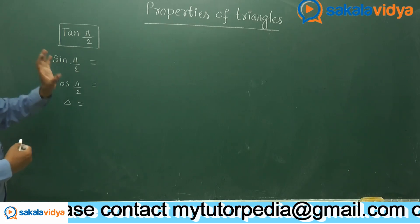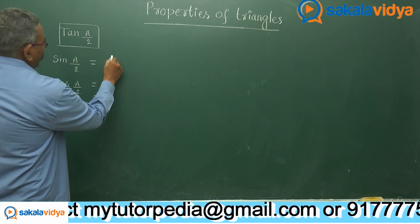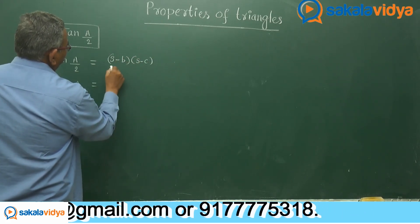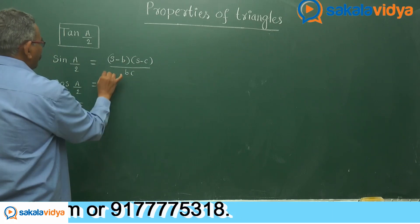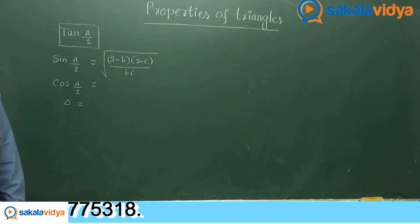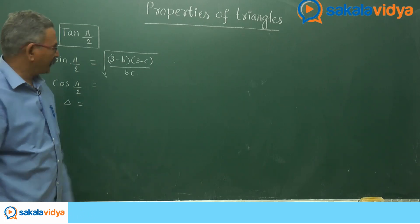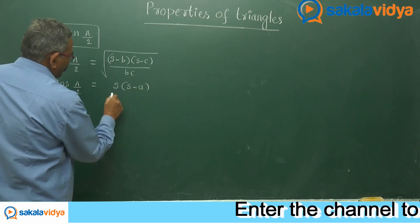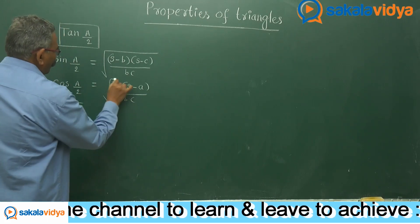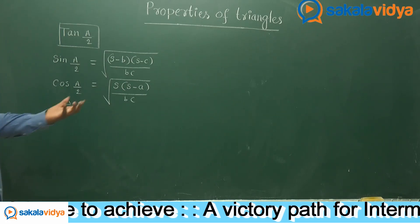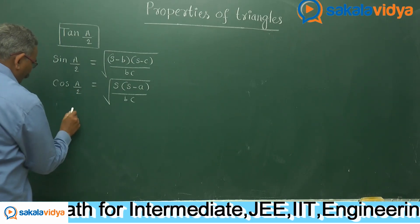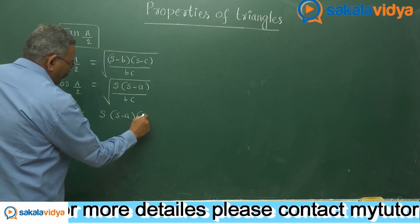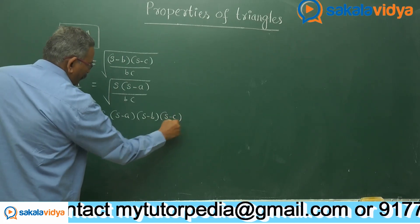First let us write the sin(A/2) formula. What is sin(A/2)? That is √[(s−b)(s−c) / bc]. What does cos(A/2) stand for? That is √[s(s−a) / bc]. And delta stands for Heron's formula: delta equals √[s(s−a)(s−b)(s−c)].